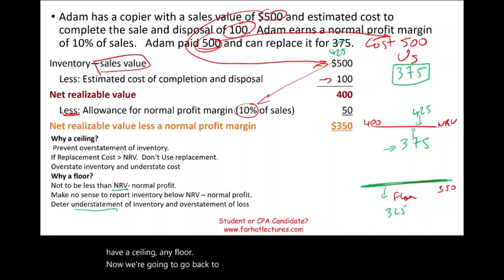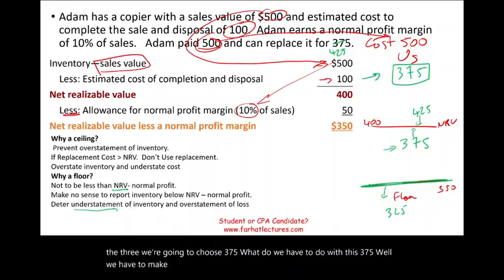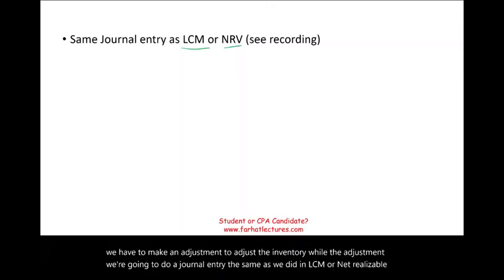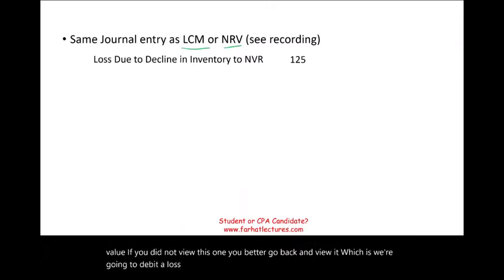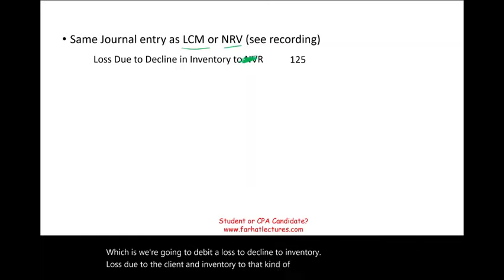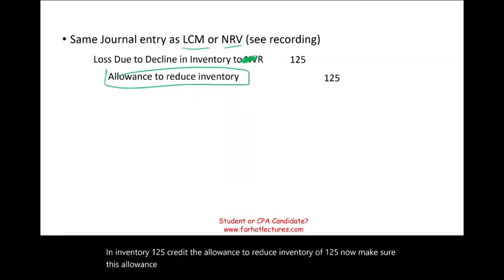Going back to the original example: we choose $375 as the market value. We need to make a journal entry to adjust the inventory — the same as we did in LCM or net realizable value. We debit a loss due to decline in inventory for $125 and credit the allowance to reduce inventory for $125. Make sure this allowance to reduce inventory is a contra asset, and it will change from year to year.